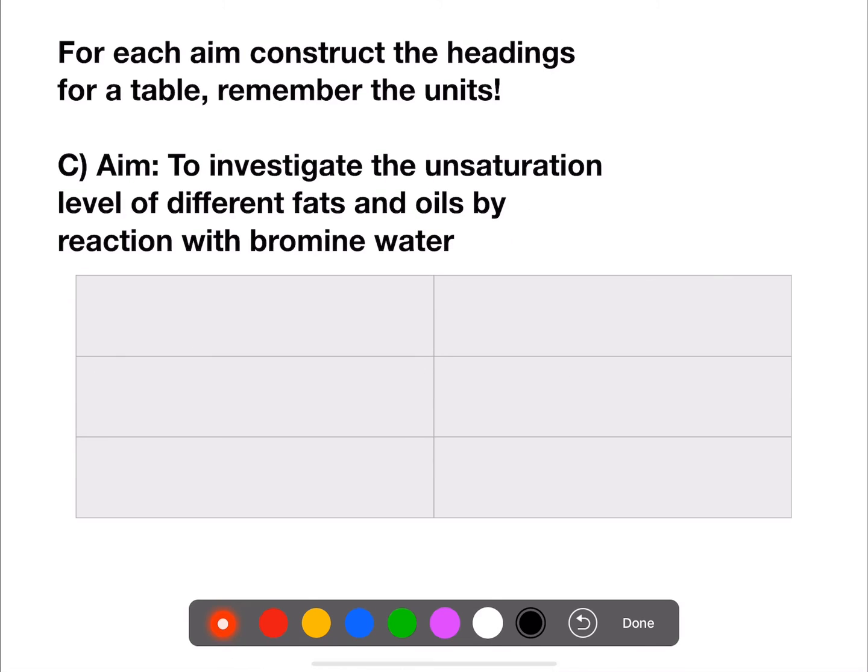And for this final aim, to investigate the unsaturation level of different fats and oils by reaction with bromine water, we would be changing the fat or the oil which is being tested with bromine water. To measure the unsaturation level, you would be measuring the volume of bromine water, that would be measured in milliliters.